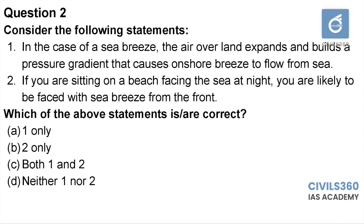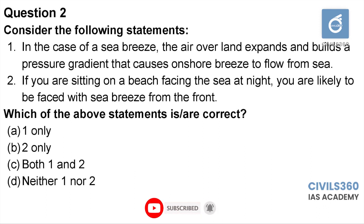Land breeze and sea breeze is an important concept in climatology. Sea breeze flows from the sea towards the land, as wind flows from higher pressure to lower pressure. Sea breeze flows from the higher pressure ocean area towards the lower pressure land area. The first statement is correct — in sea breeze, the air over land expands due to speedy warming during the daytime.